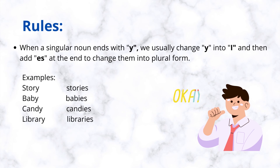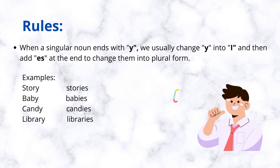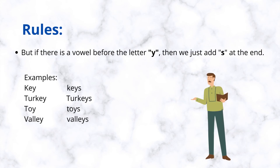When a singular noun ends with y, we usually change y into i and then add es at the end to change them into plural form. Examples: story, stories. Baby, babies. Candy, candies. Library, libraries. But if there is a vowel before the letter y, then we just add s at the end. Examples: key, keys. Turkey, turkeys. Toy, toys. Valley, valleys.